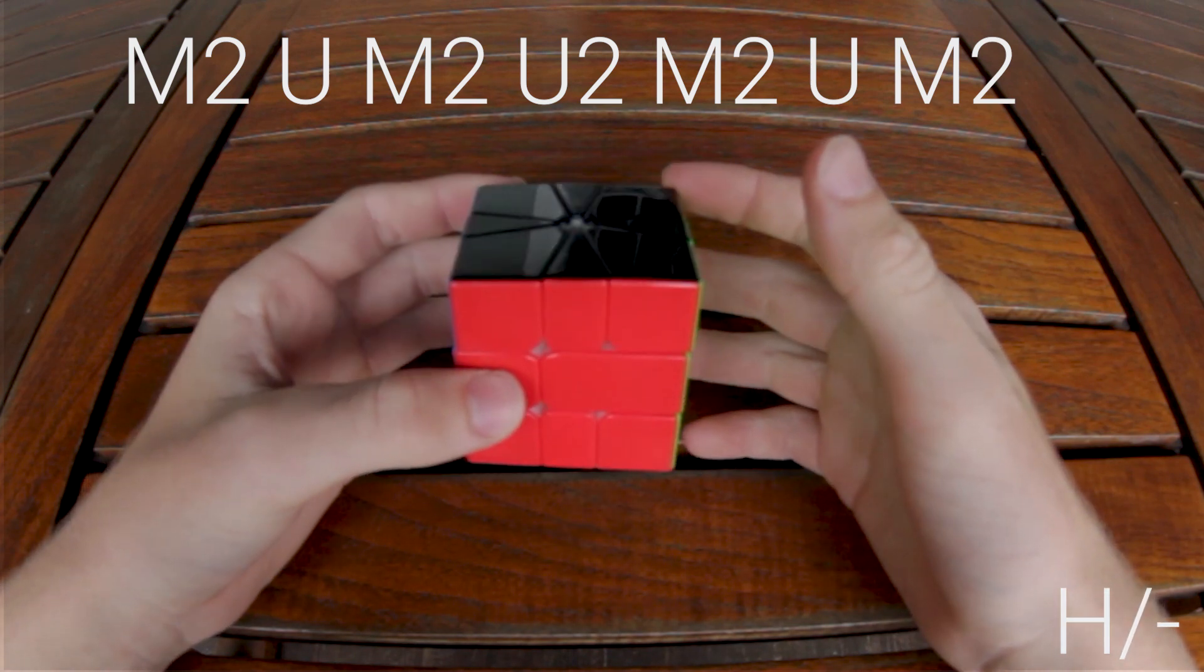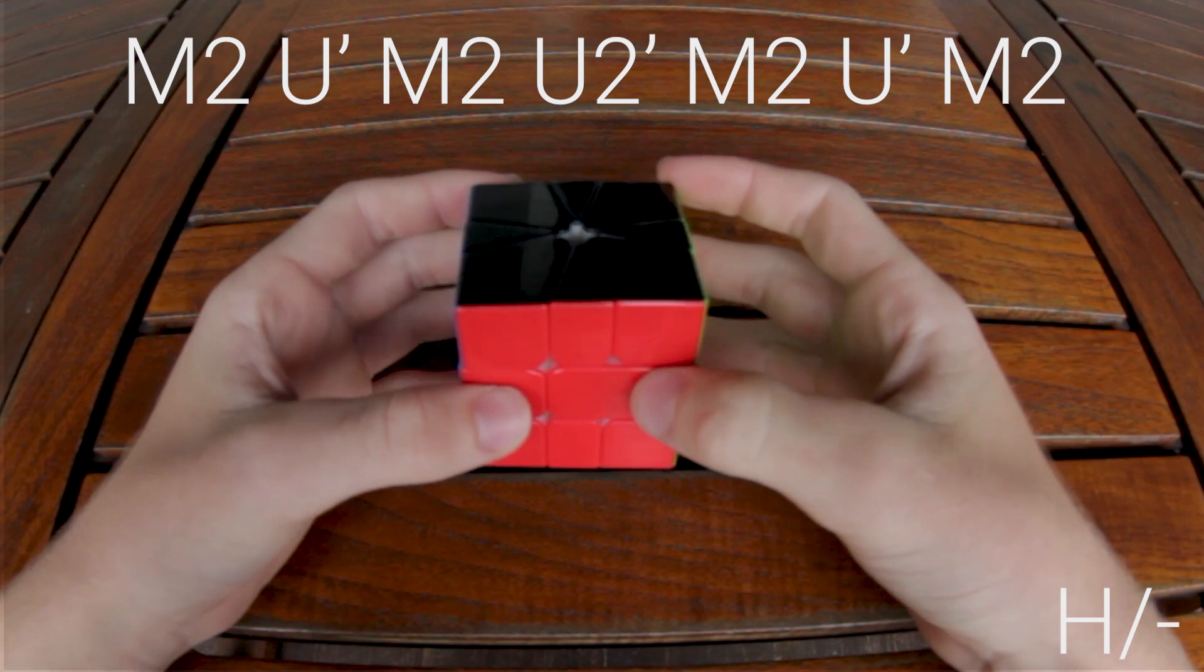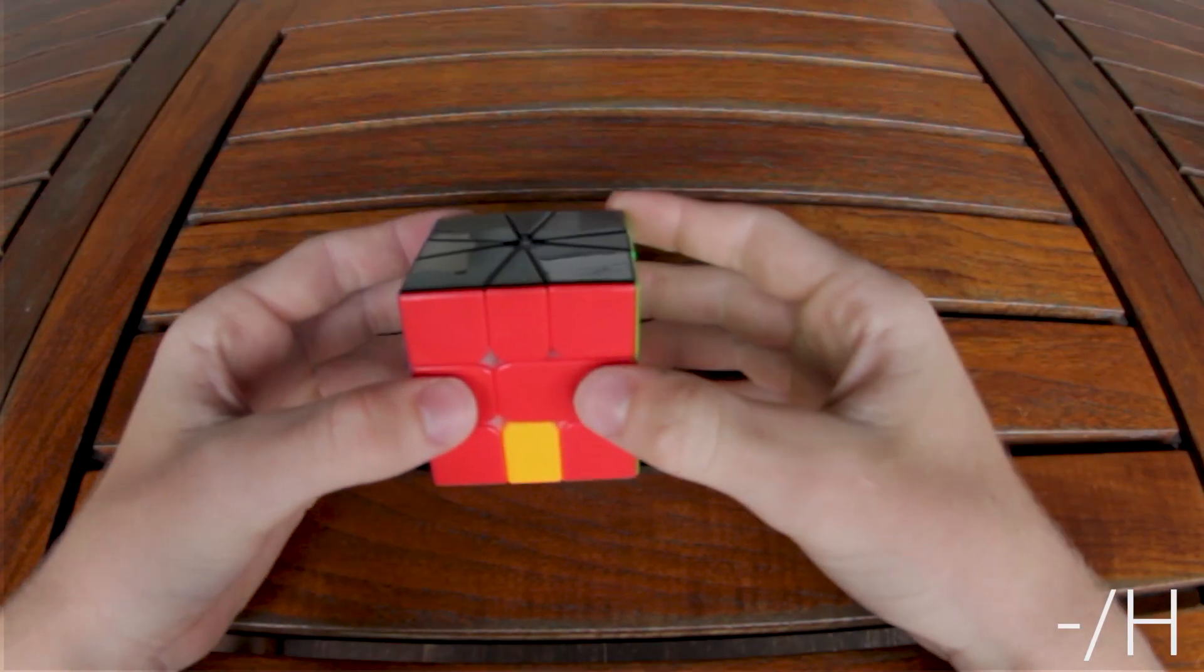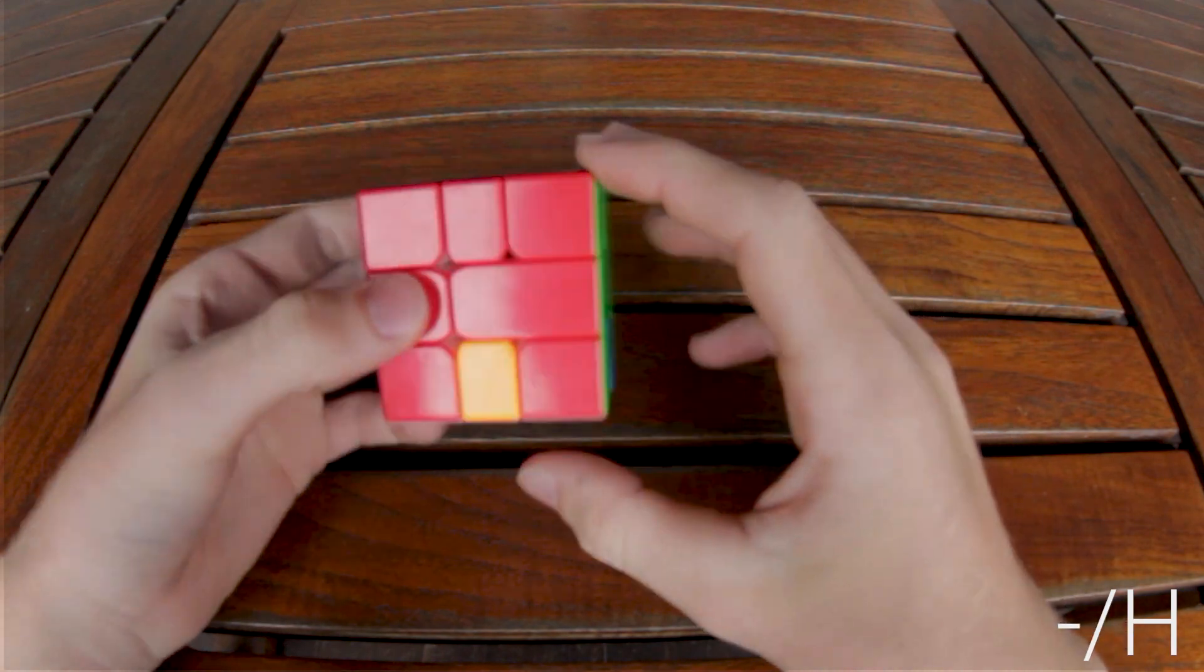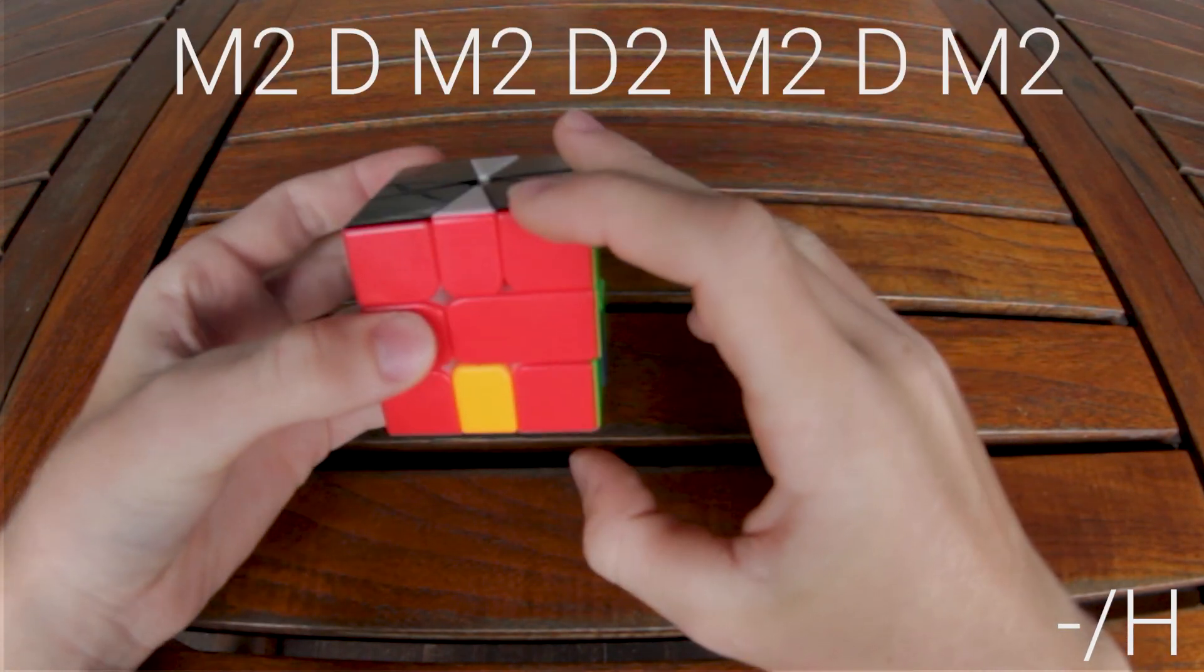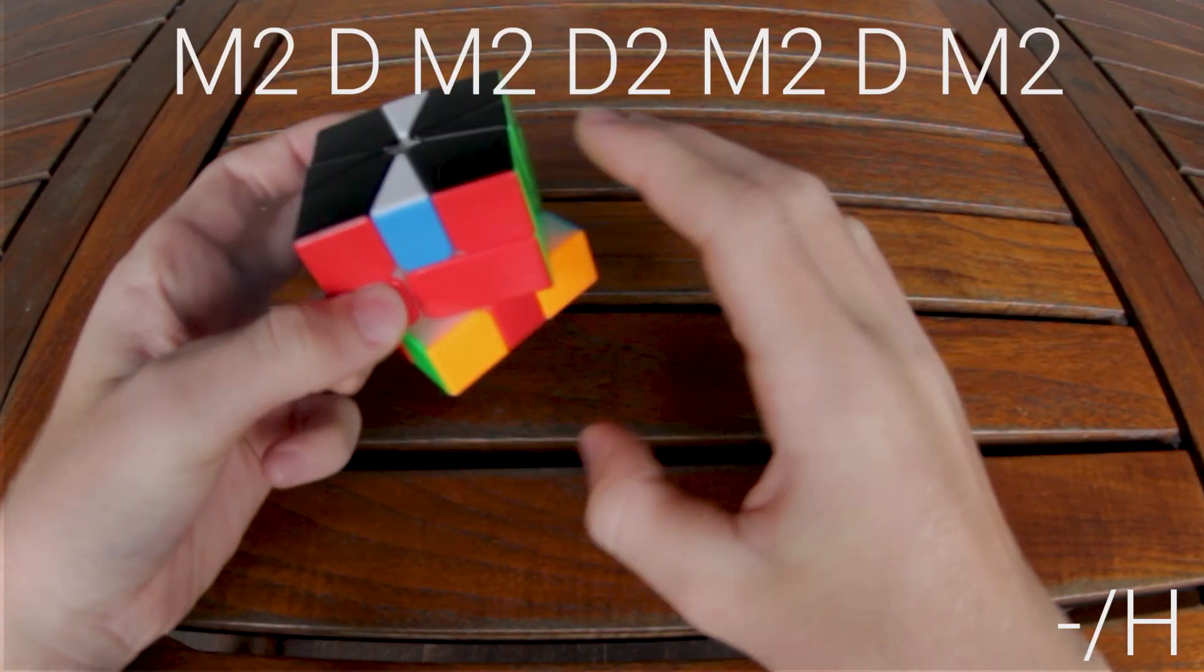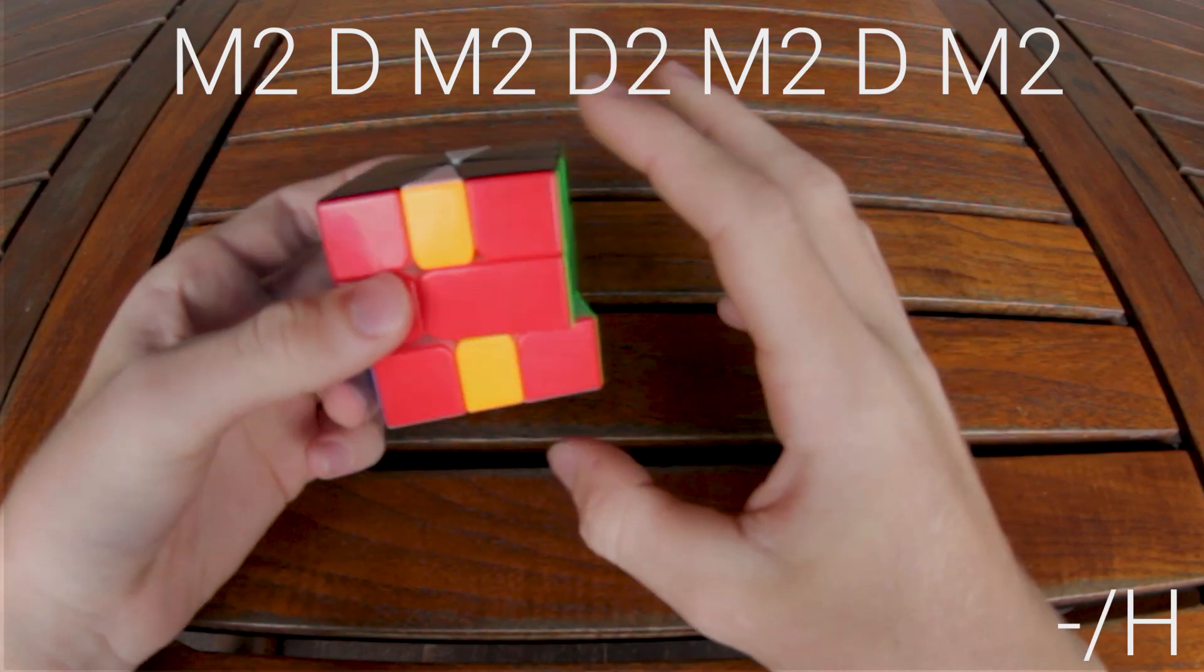You can also do the U's the opposite direction if you feel more comfortable by doing that. When the H perm is on the bottom you just do the same thing: M2, D, M2, D2, M2, D, M2.